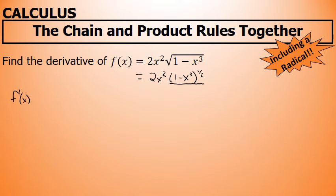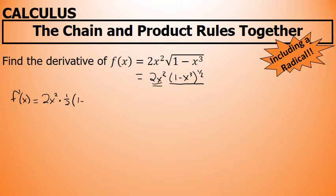We're going to use the product rule when taking this derivative. The first factor is 2x² and the second factor is (1 minus x³)^(1/2). The product rule states that the derivative is the first factor unchanged times the derivative of the second factor. The derivative of the second factor, by the chain rule, is one-half times (1 minus x³) with the power decreased by 1 to negative one-half.